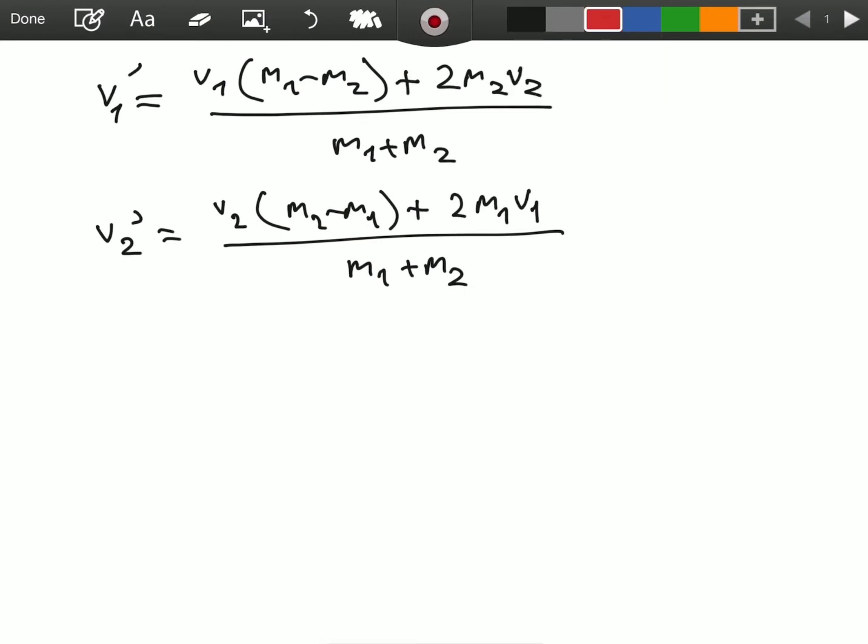So, what would happen if, let's say, m1 is much greater than m2? Perhaps our picture is like this. We have m1, massive, and we have m2, tiny. And they are moving in some direction, and they will collide at some point.